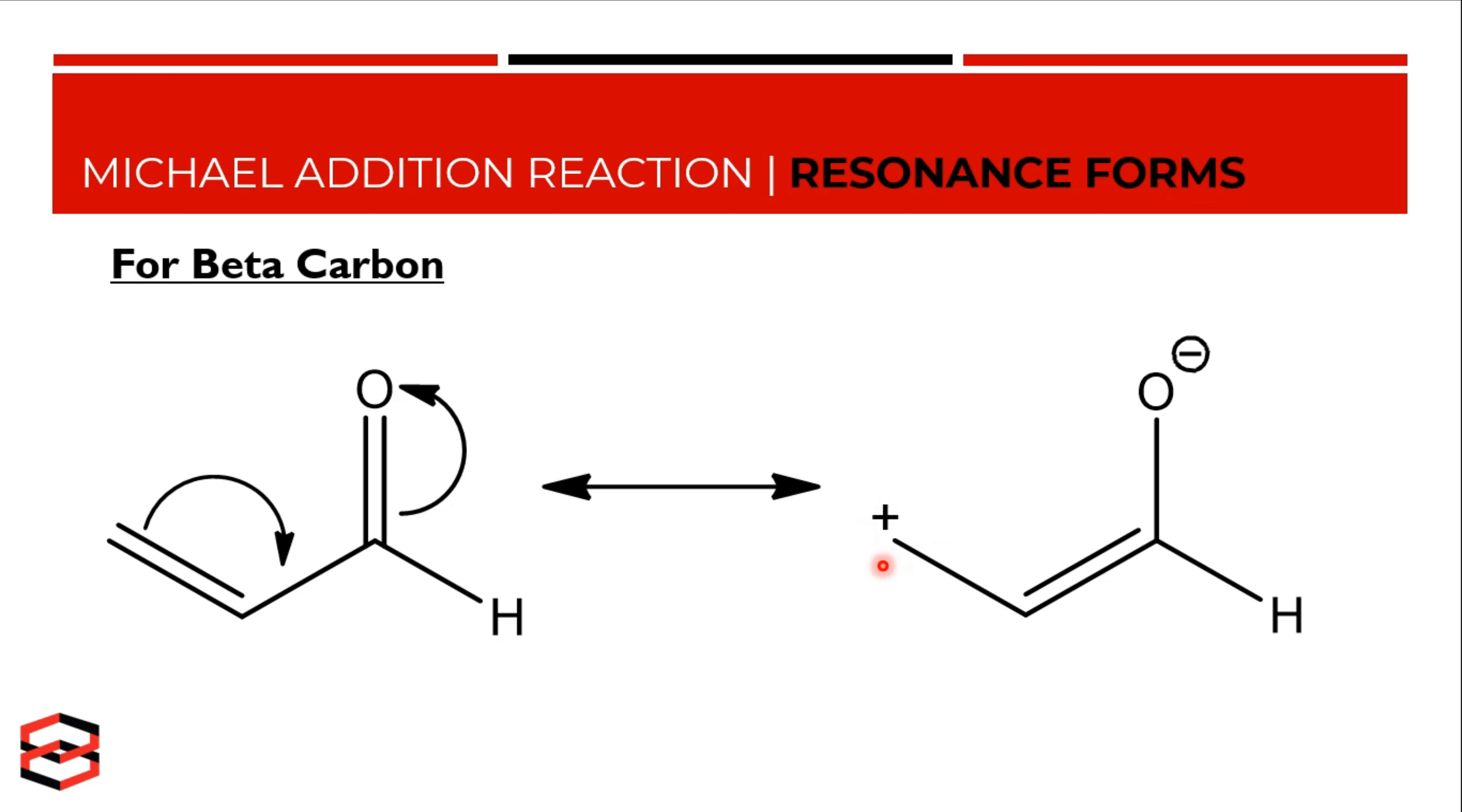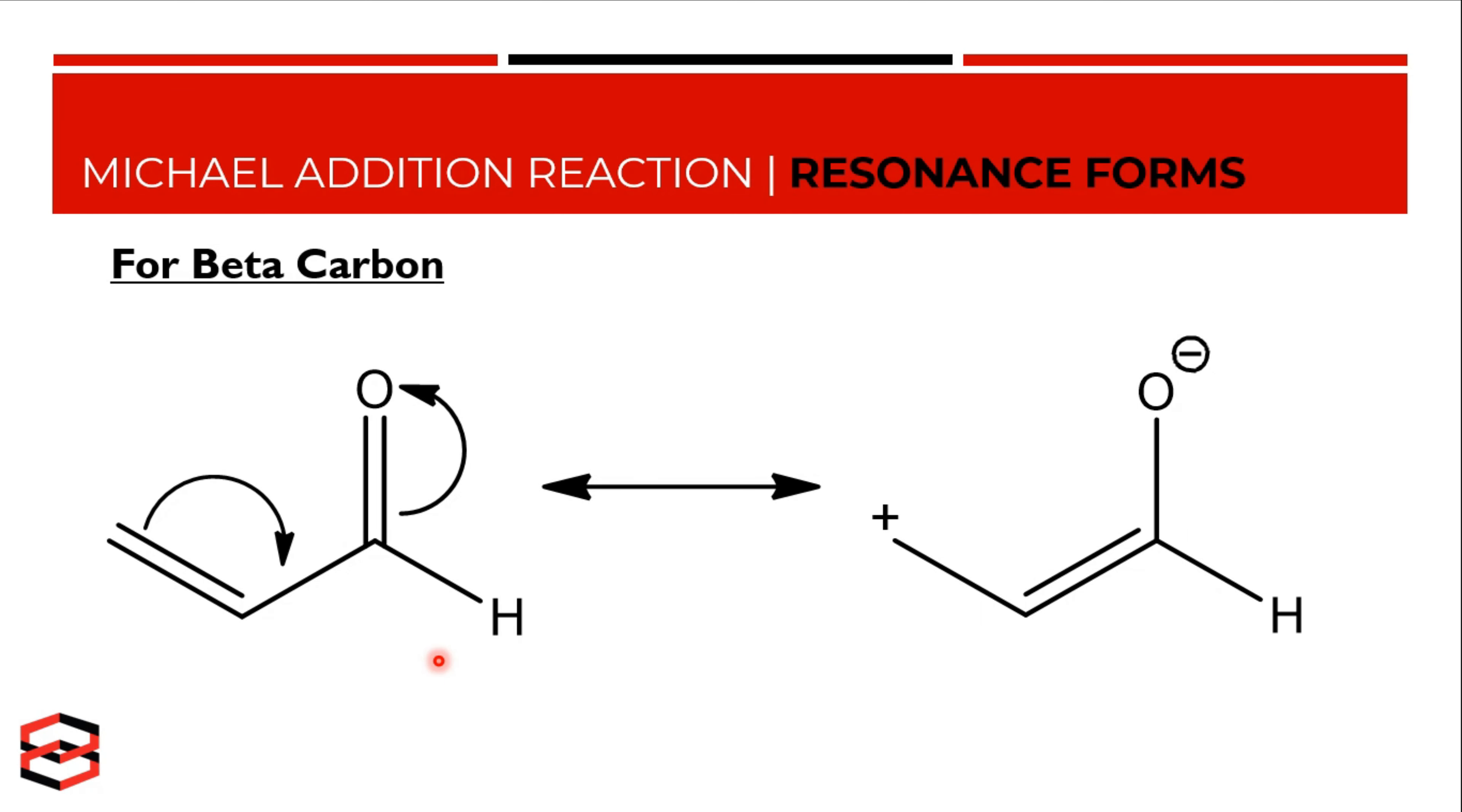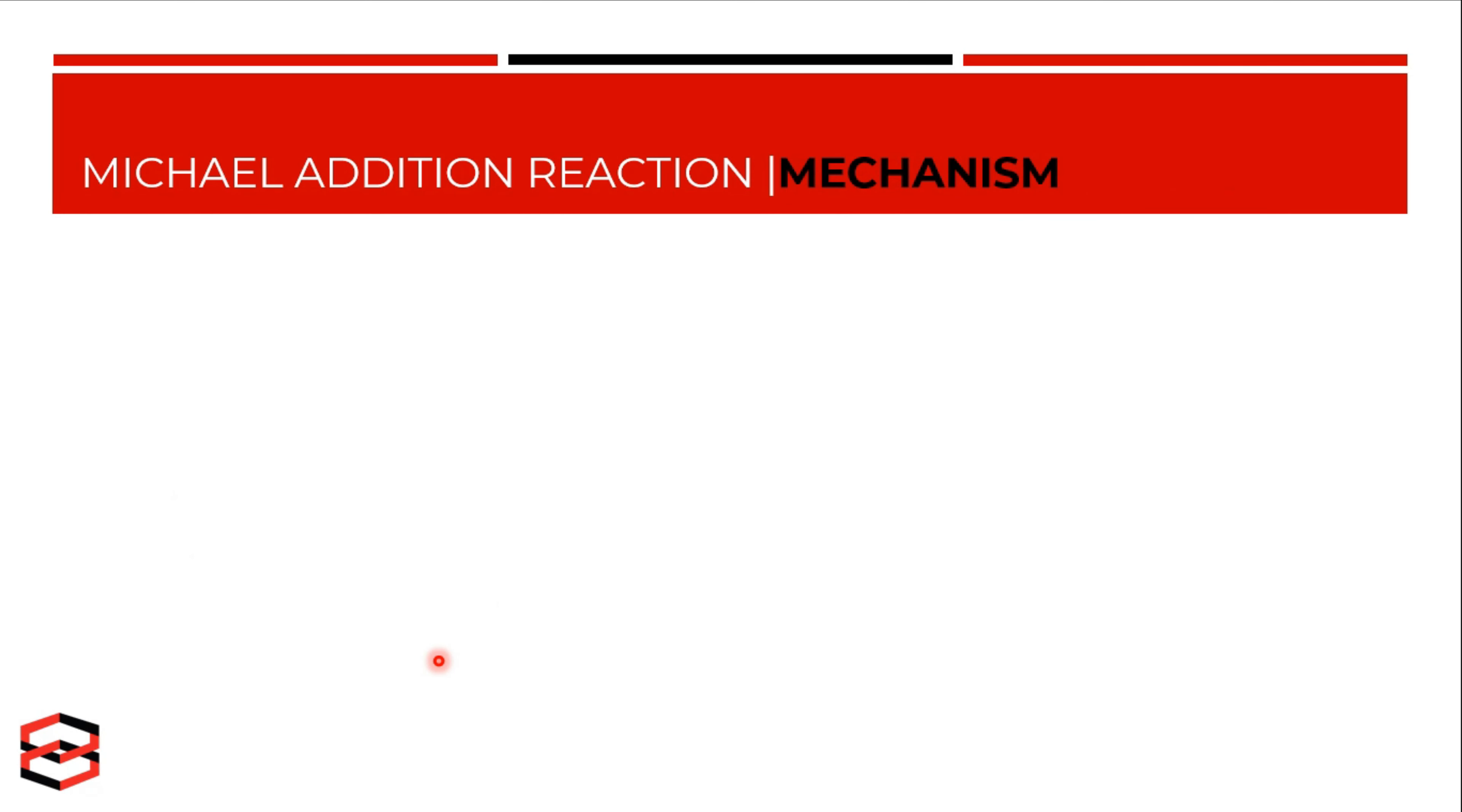Now let's get back to the reaction. Here we have a Michael donor, this Michael donor is a stabilized enolate ion. The Michael donor is basically a nucleophile and is going to react with the Michael acceptor, which is an alpha-beta unsaturated aldehyde. The Michael acceptor serves as an electrophile. So the carbon atom with a negative charge present on it attacks the beta carbon of the Michael acceptor.